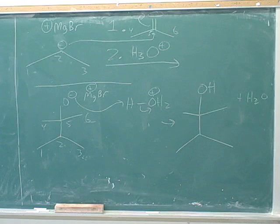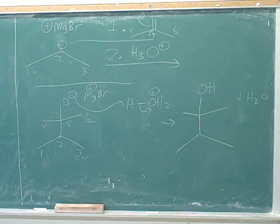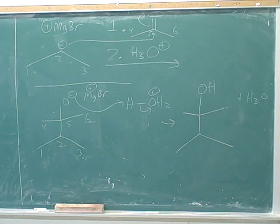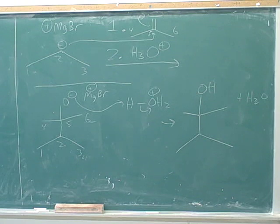By the way, earlier we talked about carboxylic acids, but we're not going to cover any reactions between Grignards and carboxylic acids. As far as we're concerned, Grignards are not going to react with them. Actually, we know how a Grignard would react with a carboxylic acid — remember, what does a Grignard most like to do? Deprotonate somebody. Well, an acid can definitely get deprotonated; it has an OH. So the reaction between a Grignard and a carboxylic acid wouldn't be very interesting — we would just protonate the Grignard.